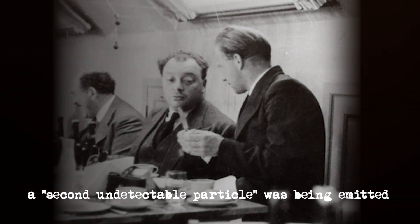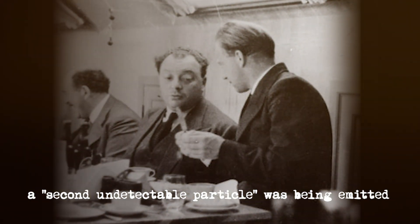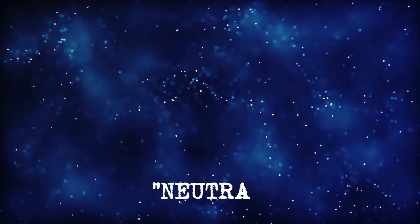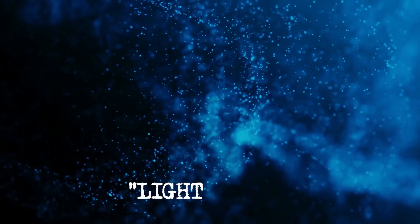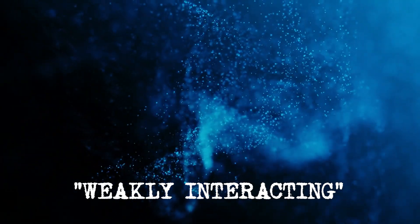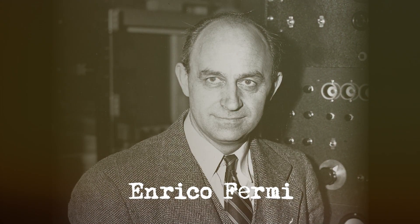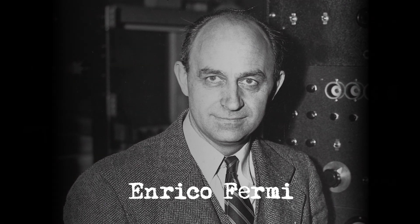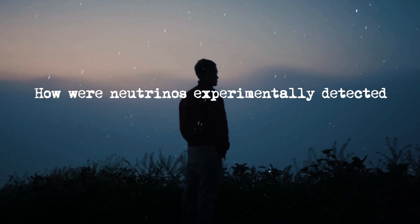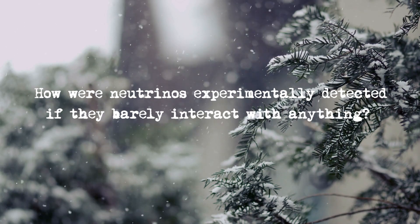Pauli hypothesized that a second undetectable particle was being emitted along with the electron, which carried varying energies, thereby conserving the overall energy. This particle, if it existed, had to be neutral to conserve charge, lightweight, and weakly interacting since it was difficult to detect. This led Enrico Fermi to coin the term neutrino for this as-yet undiscovered particle. The question arises, how were neutrinos experimentally detected if they barely interact with anything?